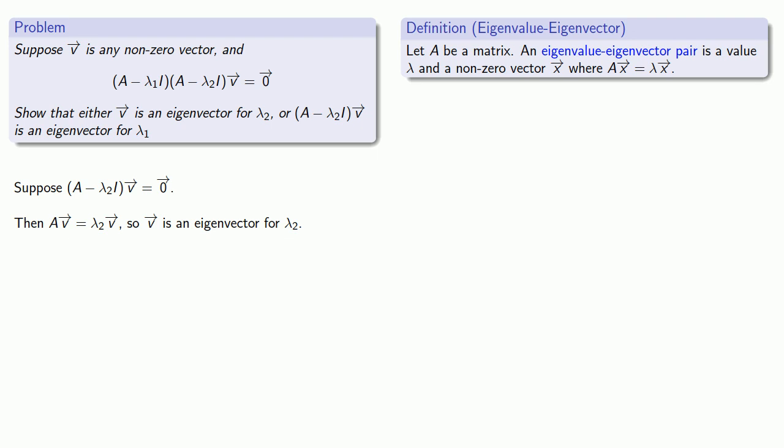So suppose (A - λ2I)v is w, where w is not the zero vector. But we still have our equation. And that gives me this equation, which we can expand.